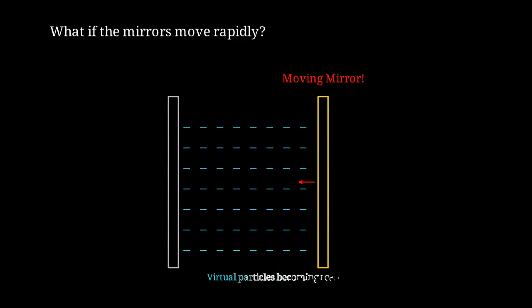When a mirror moves, or accelerates rapidly, it can actually convert virtual photons from the vacuum fluctuations into real photons that can be detected. The vacuum fluctuations get promoted to real particles.